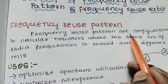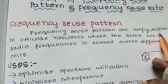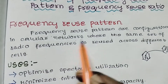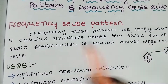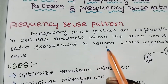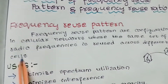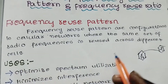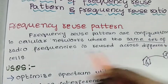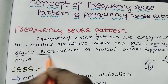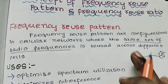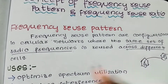Frequency reuse patterns or configurations in cellular networks where the same set of radio frequencies is reused across different cells — same set of radio frequency across different cells.